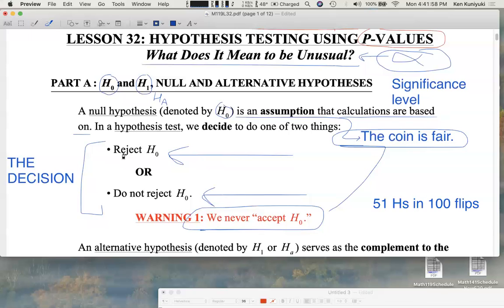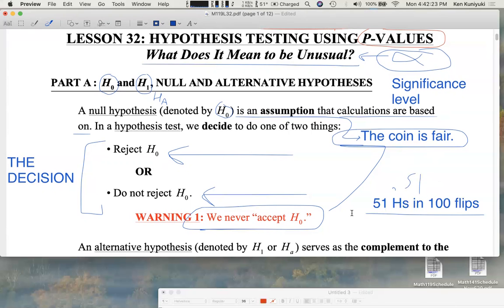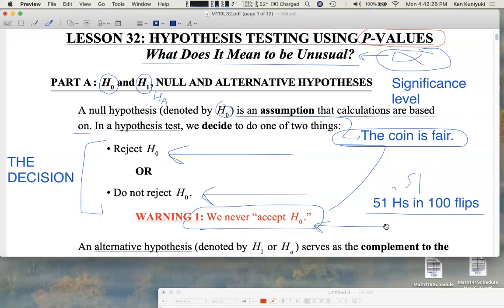Now, it's possible that you might not reject the null. It's possible you might not reject the null. You may not reject the idea that the coin is fair, but you're not ready to affirmatively accept it either. Because based on this sample data, what's the most likely probability of heads? It's not 0.5, it's 0.51. We're just saying this could be chalked up to sampling error. So again, we never accept the null.